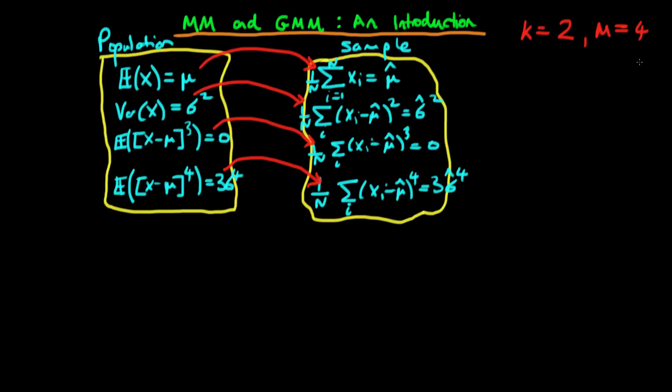So instead what we chose to do is we chose to define something which we called a cost function. What the cost function did is it measured the deviation of each of these moment conditions from that which would be theoretically obtained.